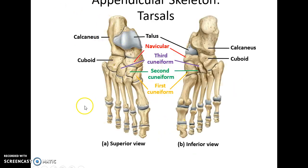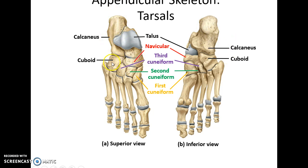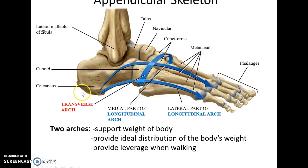Here is the foot. In the foot you have seven tarsals that form the ankle bones. You have the talus that articulates with the fibula and tibia. Below that you have the calcaneus, or heel bone. Then you have the navicular and the cuboid bones, and then the first cuneiform, second cuneiform, and third cuneiform — seven tarsals.